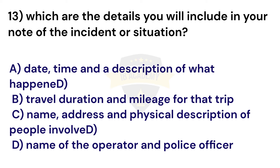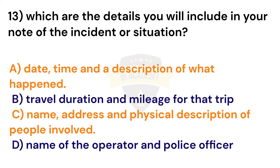Question 13: Which details should you include in your note of an incident or situation? Choose two correct options. Option A: Date, time, and a description of what happened. Option C: Name, address, and physical description of people involved. The correct answers are Option A and Option C. It is helpful to keep a written or recorded note of the incident. Include dates and times, a description of what happened, and the name, address, and physical description of people involved. You can then give these details to the police.